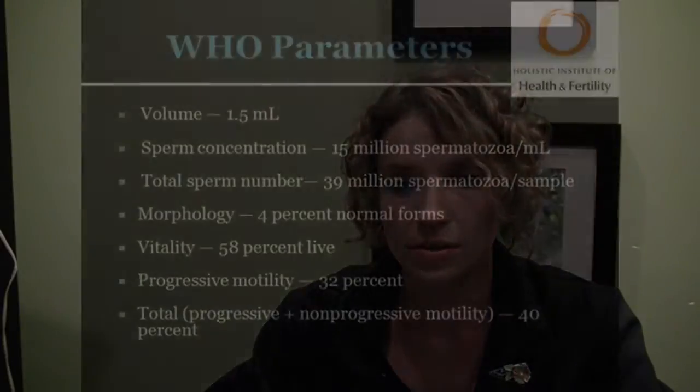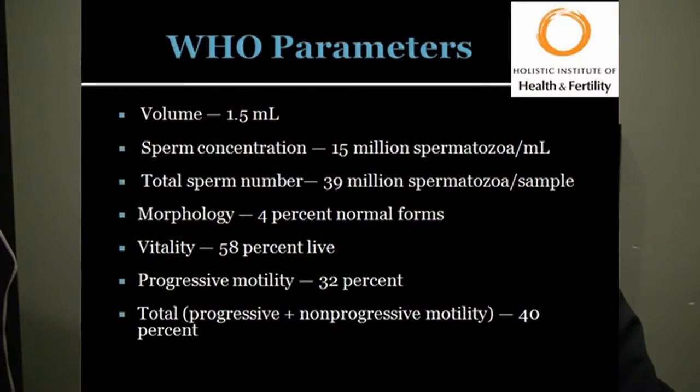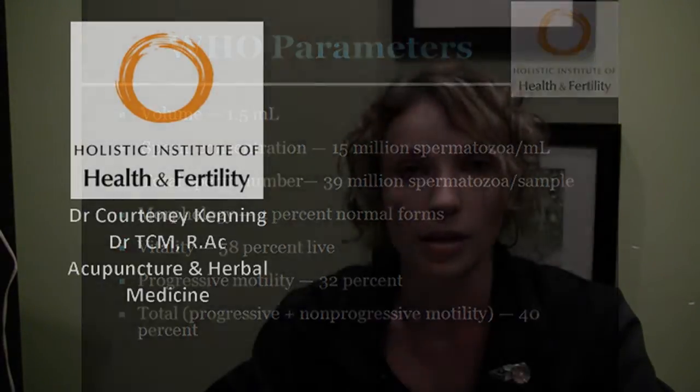The World Health Organization has made a list of parameters that all doctors follow, and this is what they're basing everything on. They're making sure that you have a volume of at least 1.5 milliliters. The sperm concentration needs to be 15 million sperm per milliliter, and a total sperm number of 39 per sample. They're also looking at the morphology, the vitality, and how well the sperm swim.